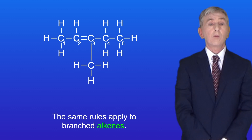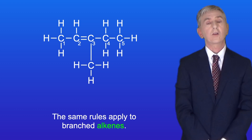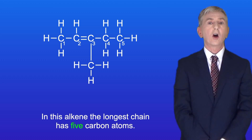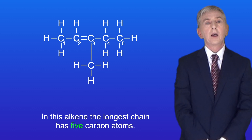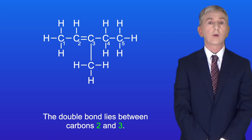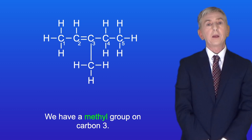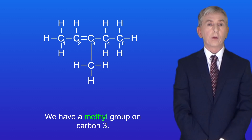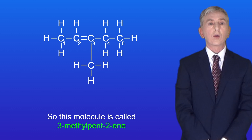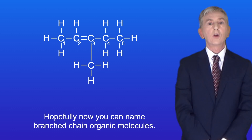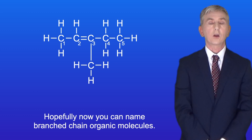The same rules apply to branched alkenes. In this alkene the longest chain has five carbon atoms and the double bond lies between carbons 2 and 3, so this is based on the molecule pent-2-ene. We've got a methyl group on carbon 3, so this molecule is called 3-methyl-pent-2-ene. Hopefully now you can name branched-chain organic molecules.